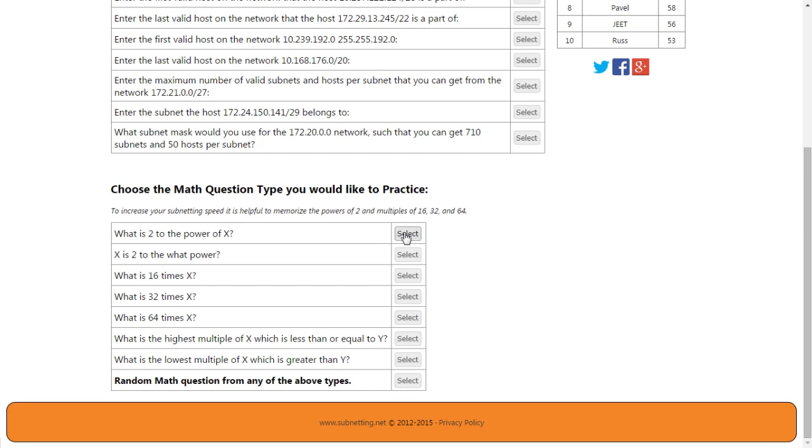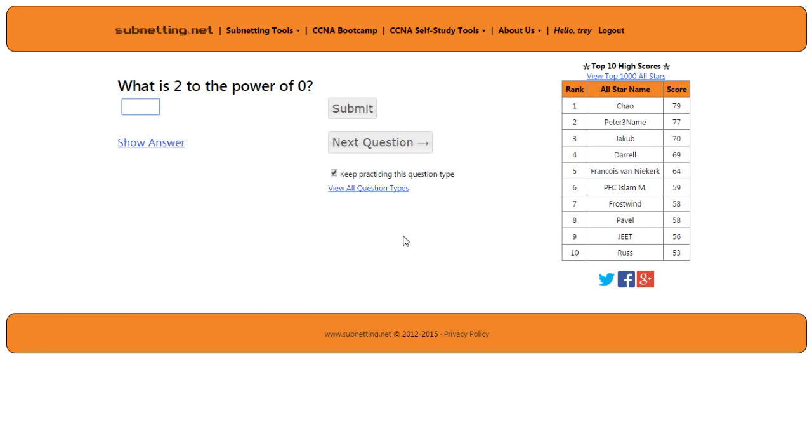The first two math question types are directly related to this lesson. Here's an example. What is 2 to the power of 0? Well, that, by definition, is 1. What is 2 to the power of 7? That's 128. Note you can also hit enter rather than clicking the submit button. Enter also works for the next question button if you get the question right. Okay, back to the lesson.